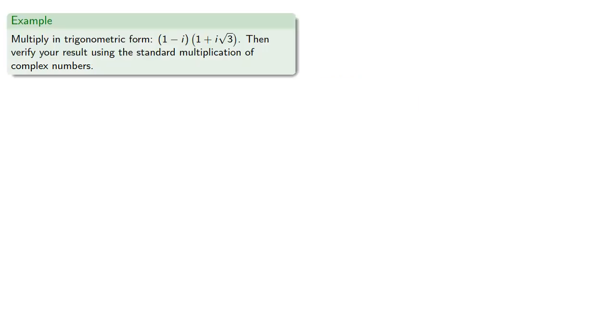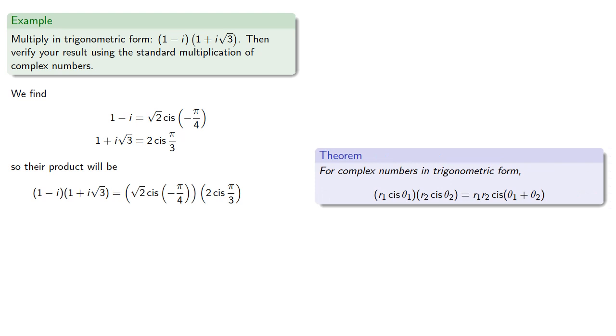So let's try that out. Let's multiply in trigonometric form, then verify our result using the standard multiplication of complex numbers. So we need to convert both of these into polar form. Now that our numbers are in trigonometric form, they're easy to multiply. We multiply the moduli to root 2, and we add the arguments, negative π/4 plus π/3.